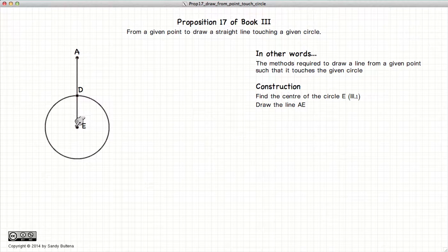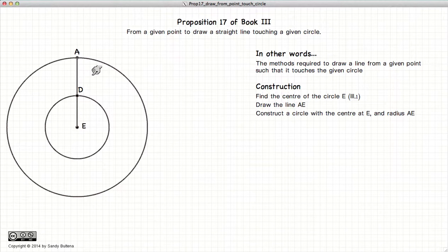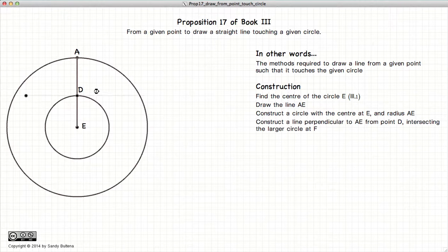Draw a circle with E as the center and AE as the radius. Now we draw a line perpendicular to ED at the point D, and where it intersects the outer circle we label that F.